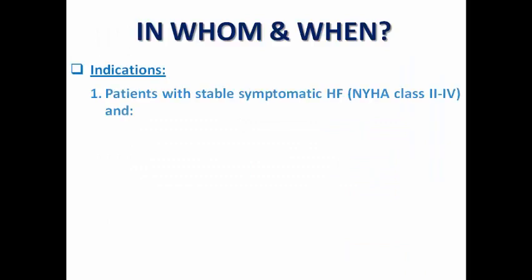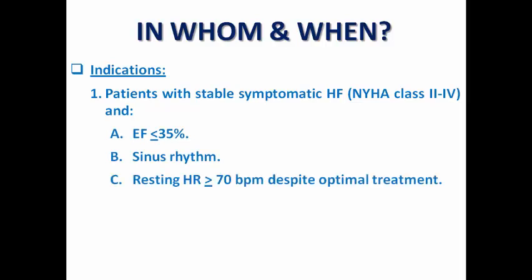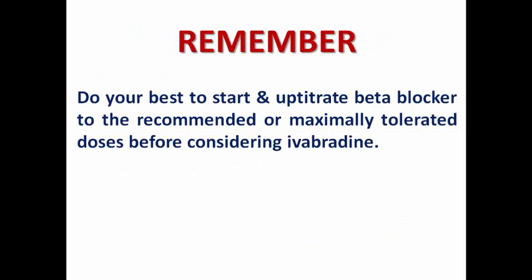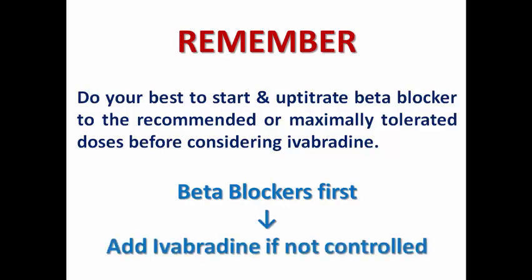The main indications are in symptomatic heart failure patients, NYHA class 2 to 4, with ejection fraction ≤35%, sinus rhythm, resting heart rate ≥70 beats per minute despite optimal treatment and in particular an evidence-based dose of beta blocker. We don't prescribe ivabradine before beta blocker. You need to do your best to start and up-titrate the beta blocker to the recommended or maximally tolerated doses before considering ivabradine. The rule is: beta blockers first, then add ivabradine if heart rate is not controlled.